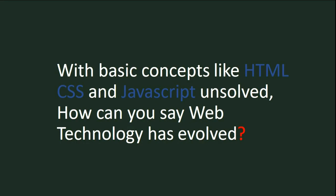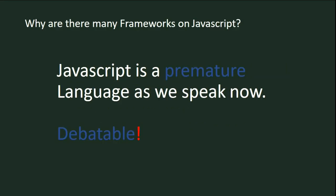This is a very serious question. The problem with today's scenario is the abstractions have evolved, but the basics have not. And that's the reason you see so many frameworks on top of JavaScript. Another important point: JavaScript is a premature language as we speak. People may argue we have ES7 and ES8, but are we really writing ES7 or ES8 code today?